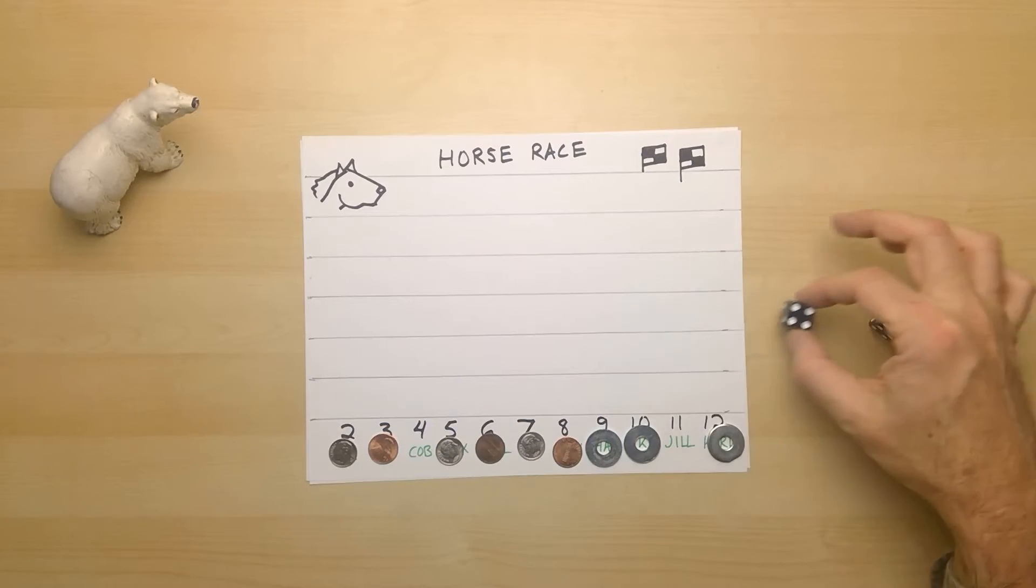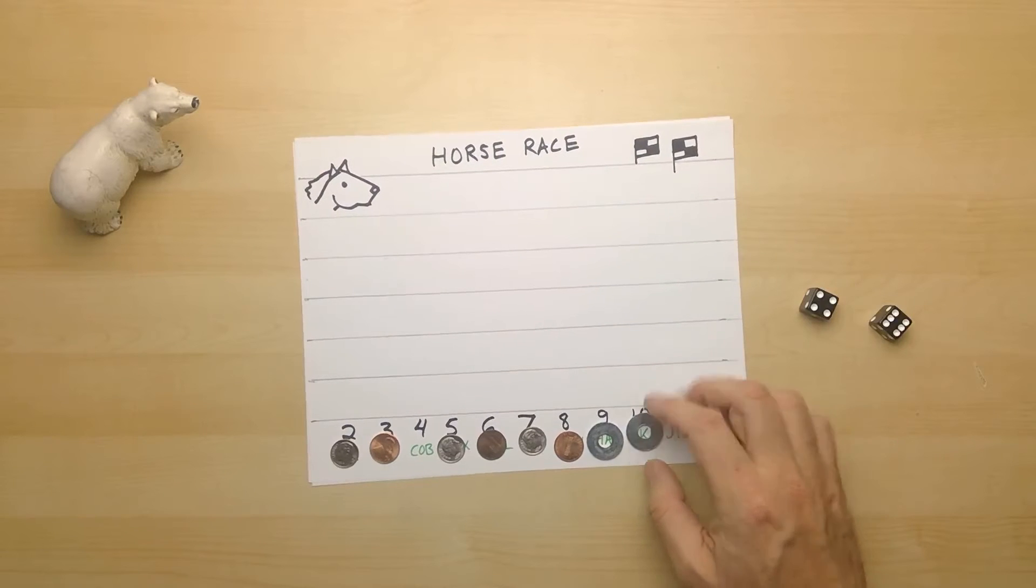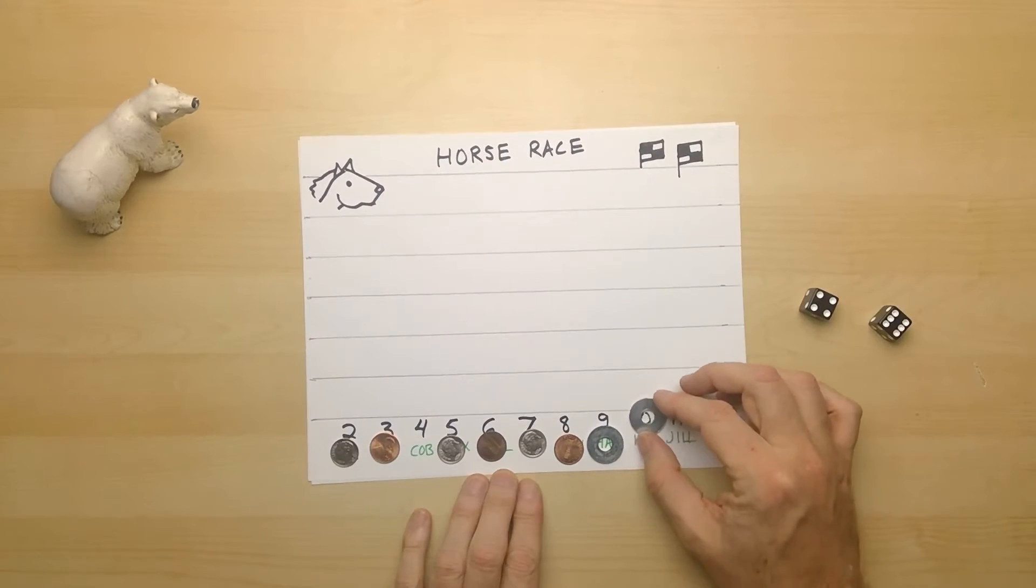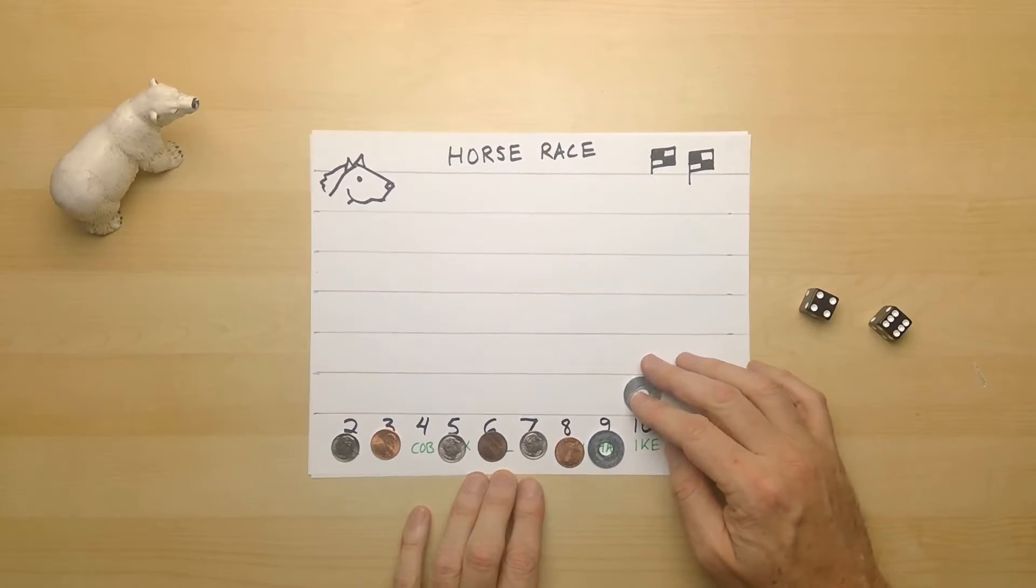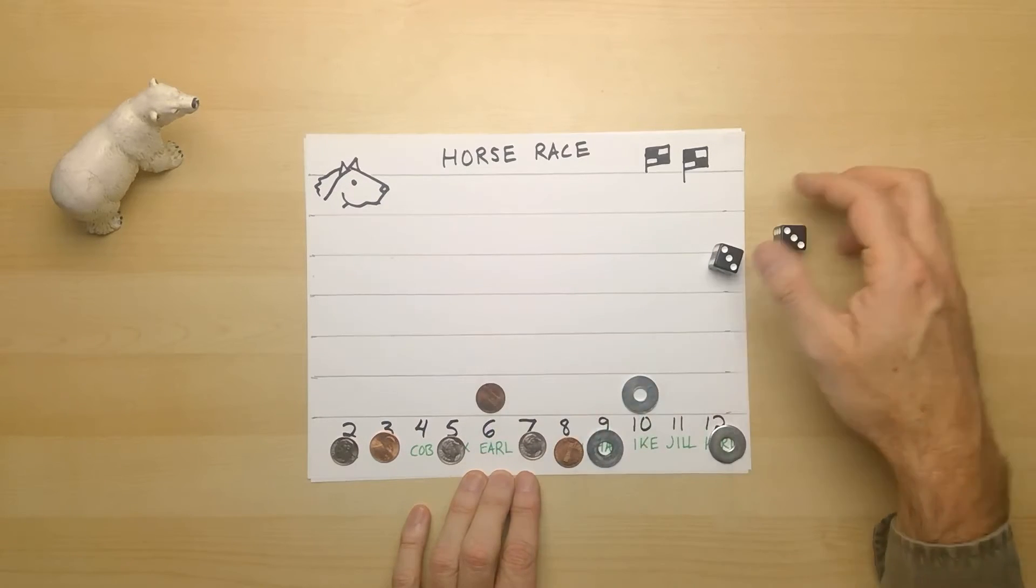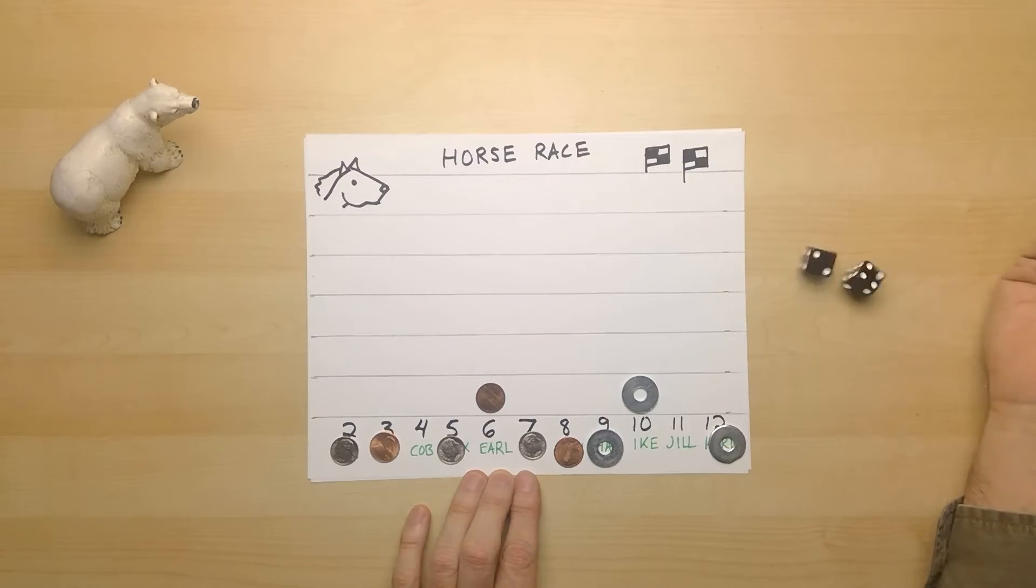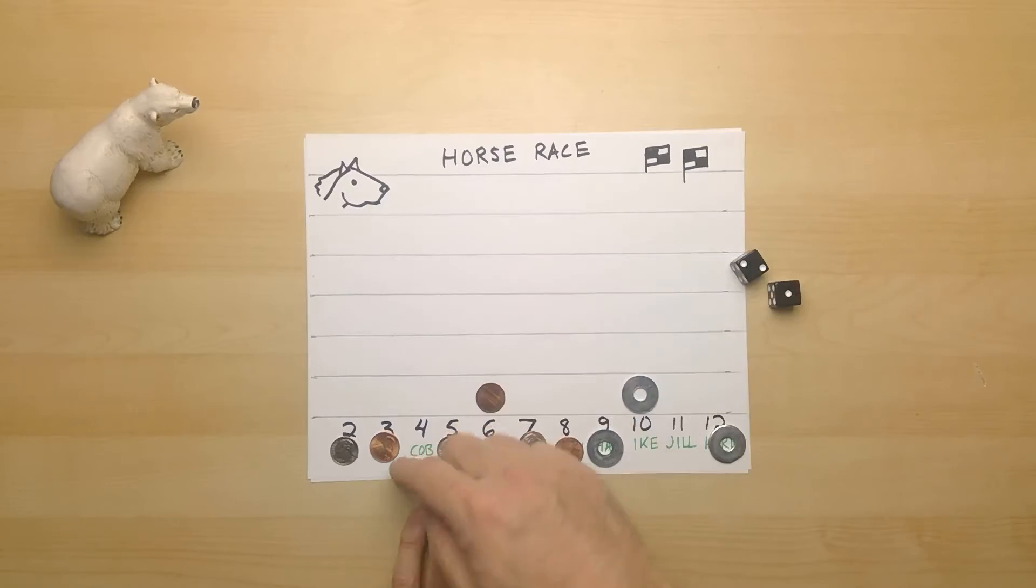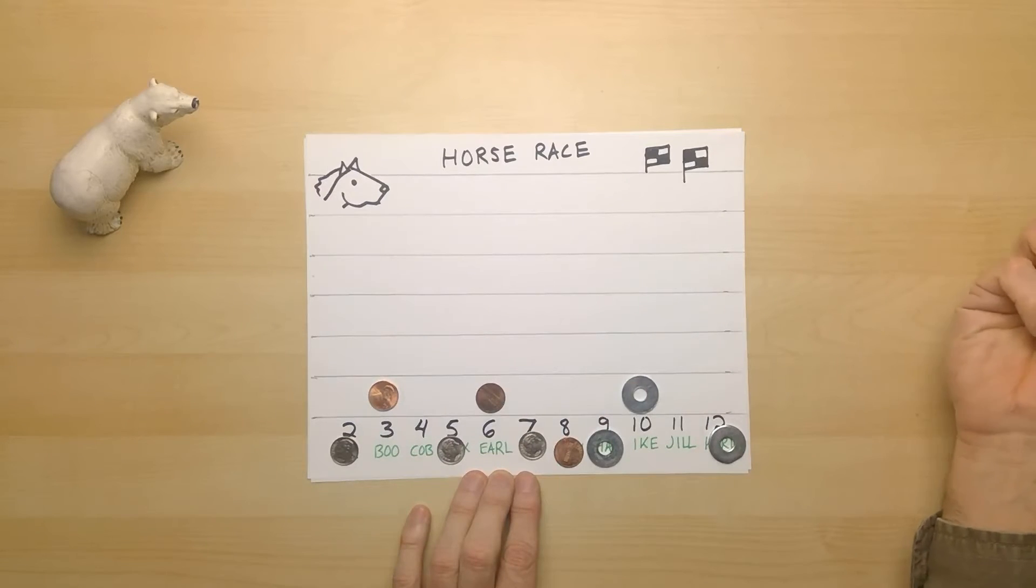I rolled a ten. Guess who gets to go first? Donut. And so Donut's horse leaves the gate. He's ahead of everybody right now. Rolling again. A six. And six is Earl. And Earl is tied now for the lead out of the gate. Three. Somebody chose Boo. So Copper has two horses in the race right now. Out of the gate.